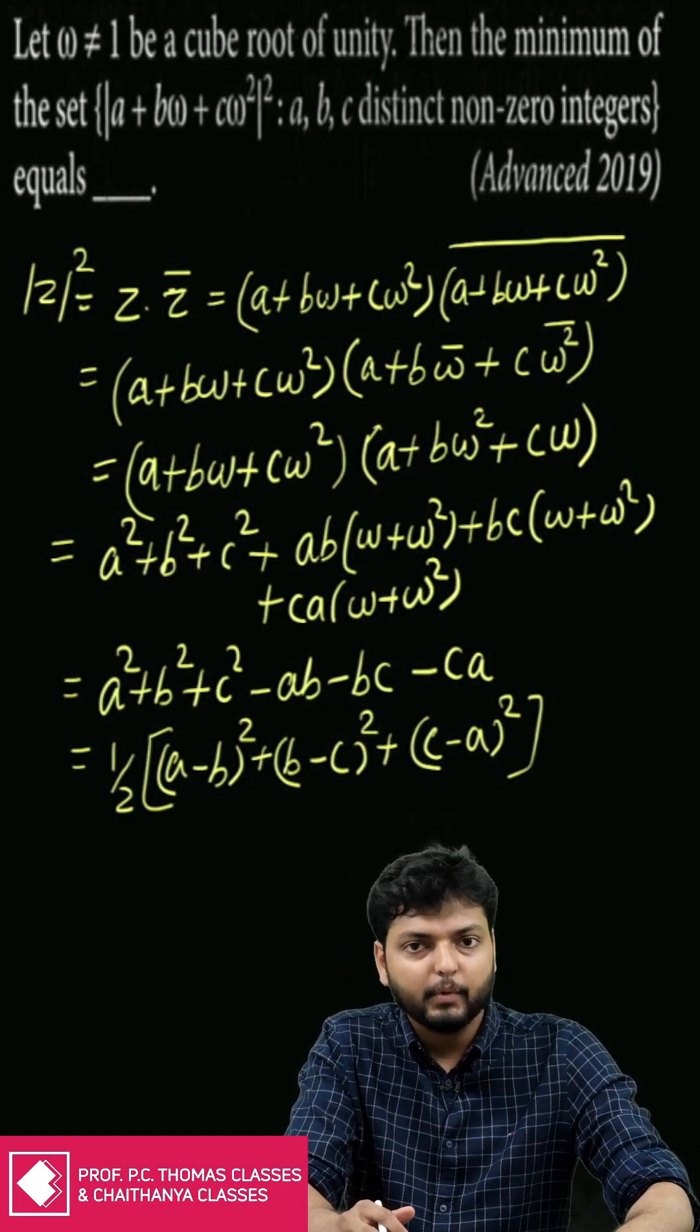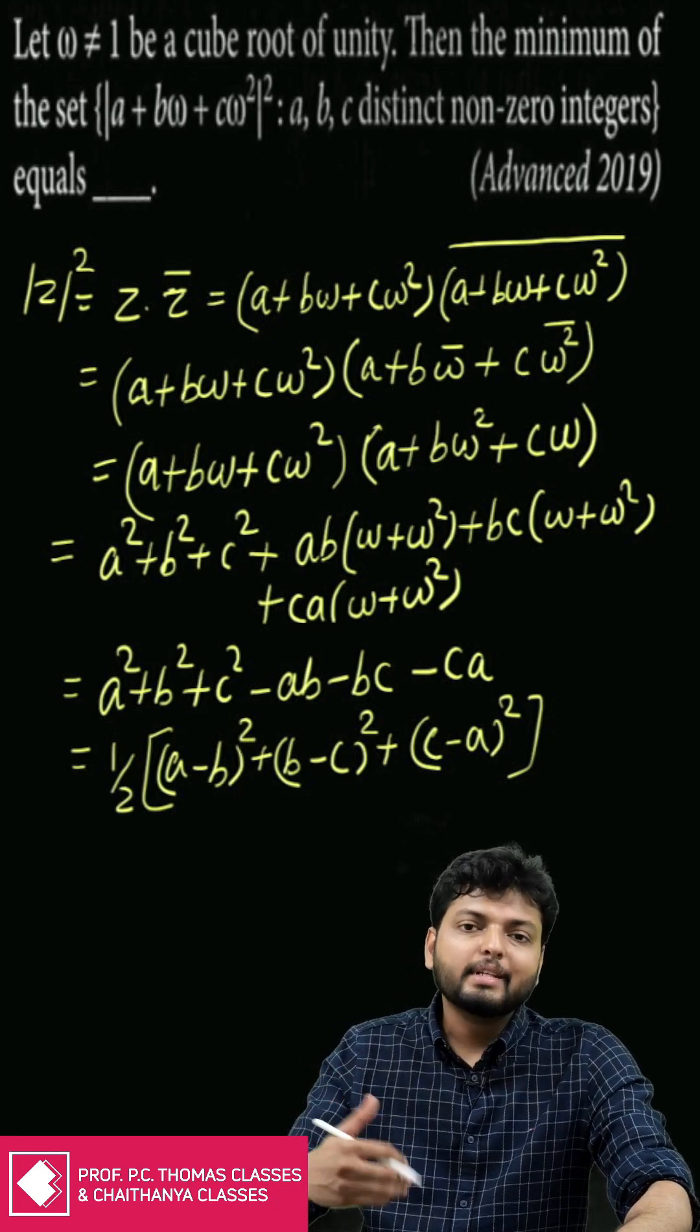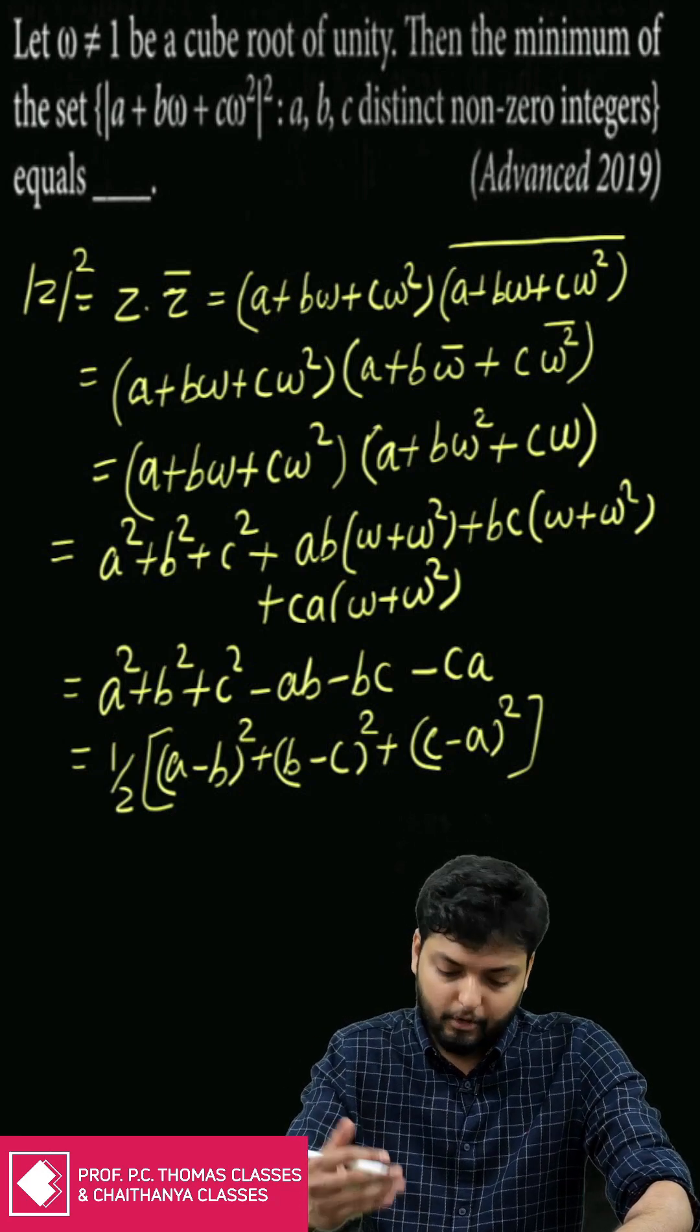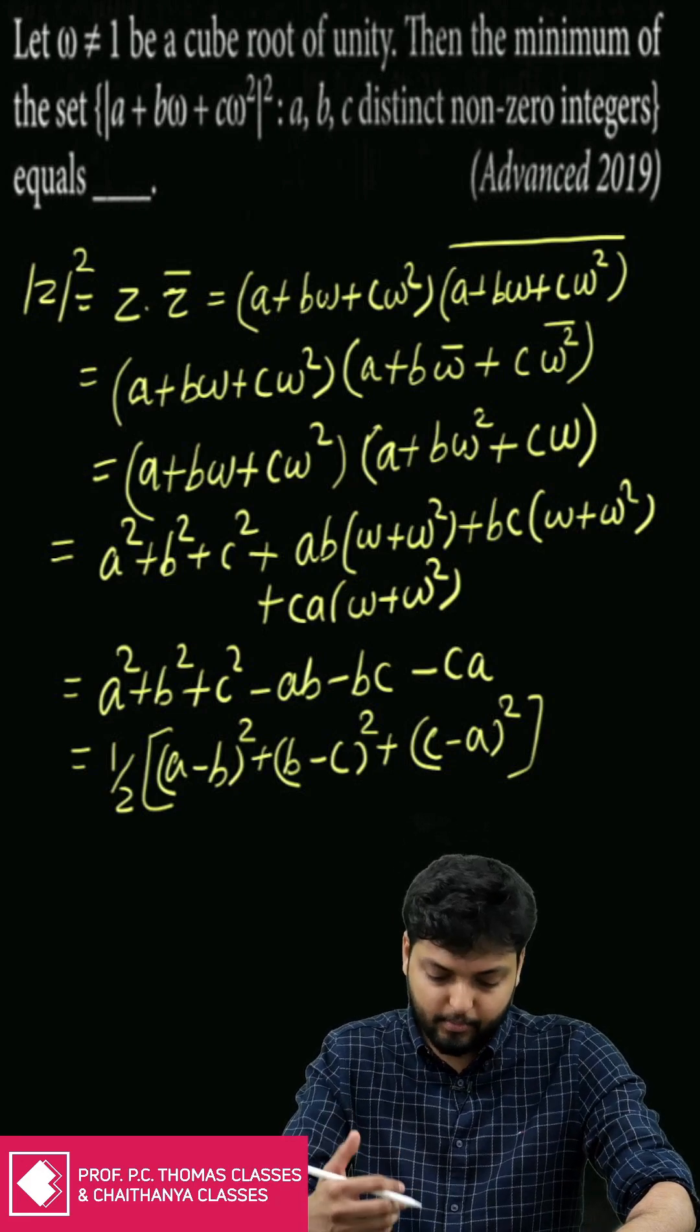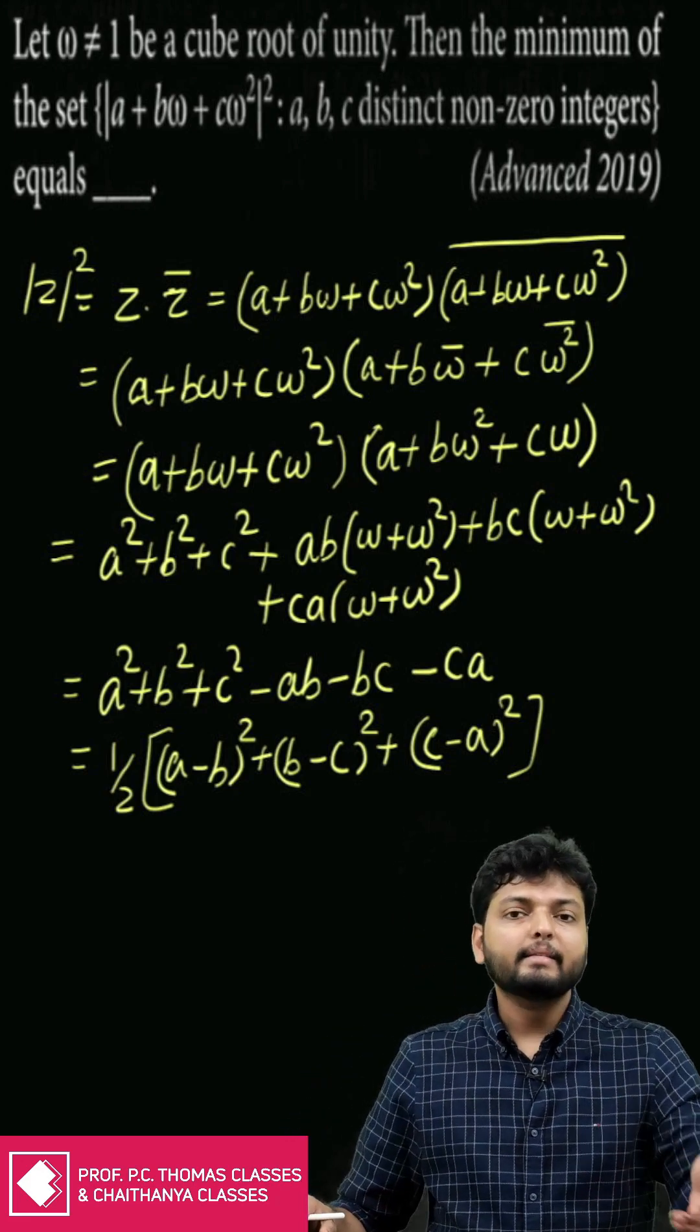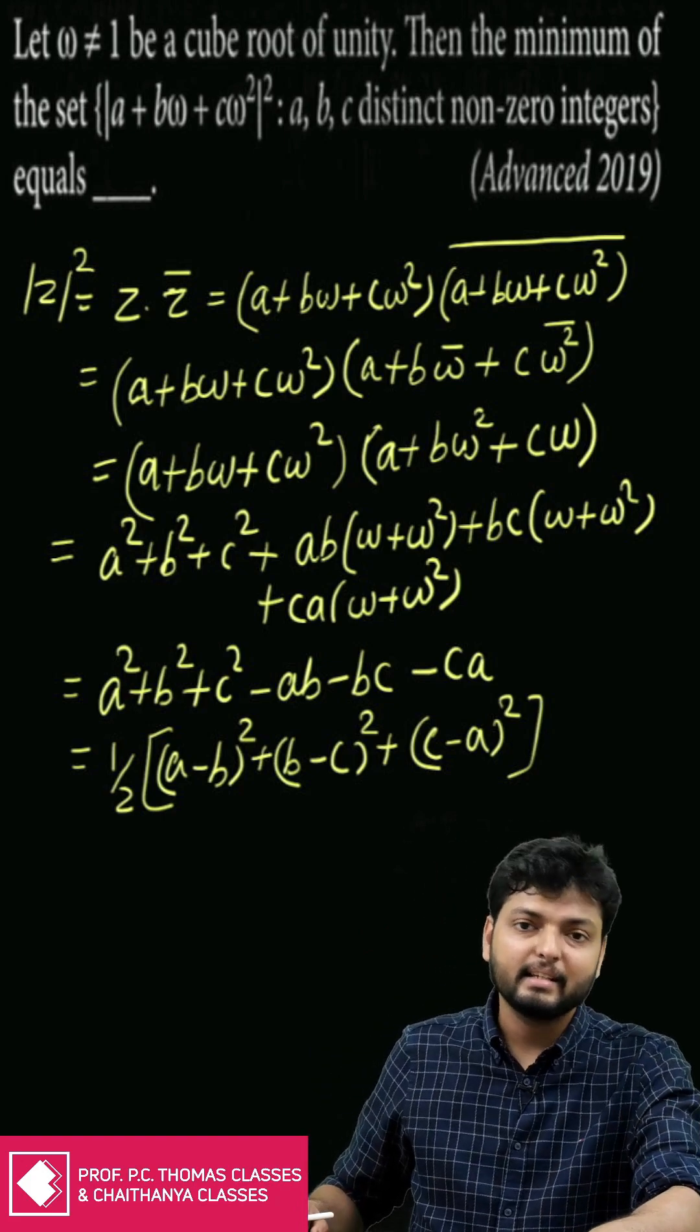Up to this point whatever we have done we have done in a very similar fashion to the previous question. Now this expression has to be minimized: ½[(a - b)² + (b - c)² + (c - a)²] where a, b, c are all distinct integers.